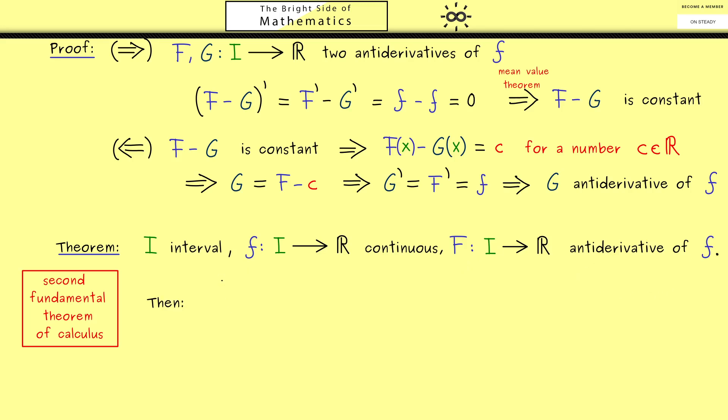And then the result is that we can calculate the Riemann integral of f from a to b. Of course, the numbers a and b should be chosen from the interval I. And then we can say this integral of f here is equal to capital F of b minus capital F of a. And there you see it does not matter which antiderivative we choose, because a possible constant here would just vanish in the difference.